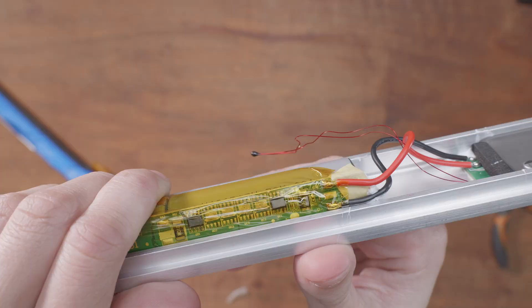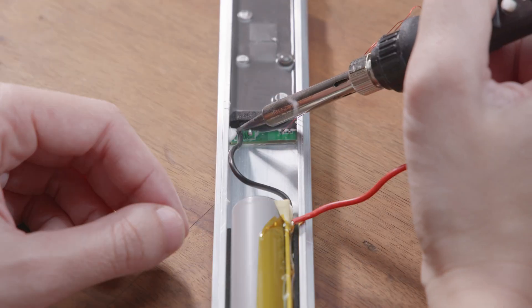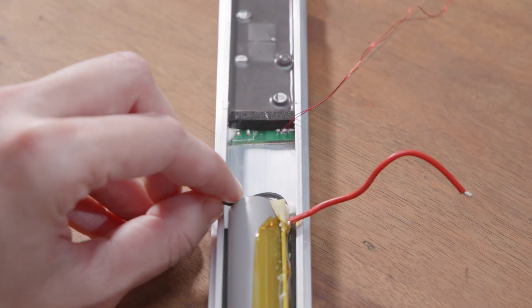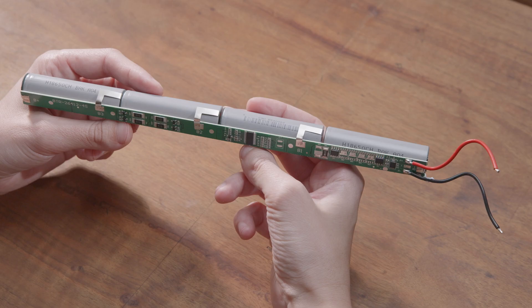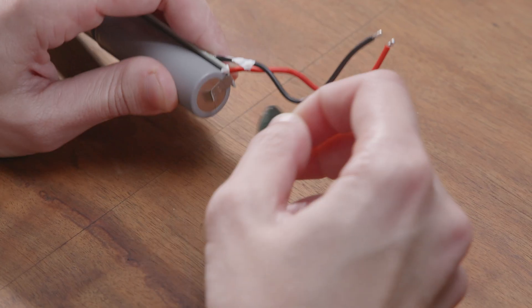Now use a soldering iron to detach two cables connecting the battery to the control board. Remove these protection caps and detach the batteries from the control board.